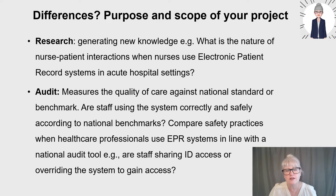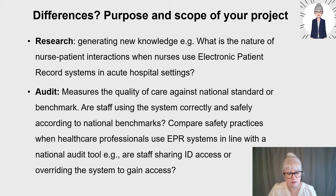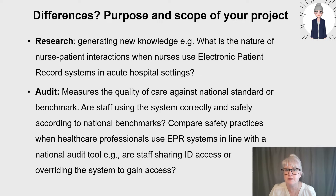When looking at the clearly defined differences between a research project, quality improvement, service evaluation or an audit, it's really about the purpose and the scope of the project - what is the aim and the objectives, what are you trying to achieve and why? I'm currently a PhD student in nursing and my study is looking at nurses' use of electronic patient records and how that may influence nurse-patient interaction, so I'll use examples linked to electronic patient records to demonstrate the differences.